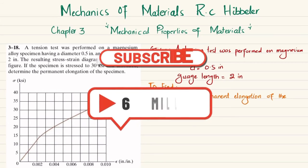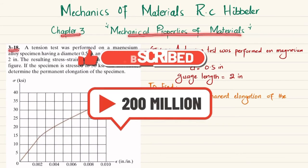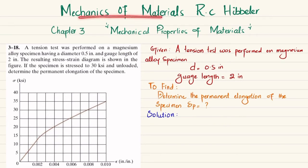Welcome back. In this video we are going to solve problem 3-18, taken from Chapter 3, Mechanical Properties of Materials, from the book Mechanics of Materials by R.C. Hibbeler. The problem statement is: a tension test was performed on a magnesium alloy specimen.